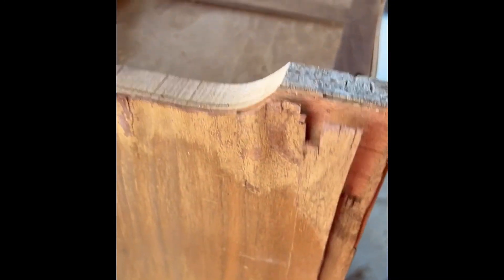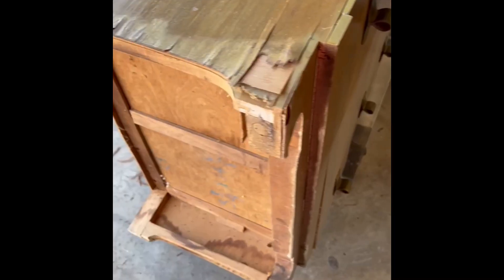This little dresser had so much veneer damage that I decided to just simply cut it off and add a new base. You can see there was a nice natural separation.